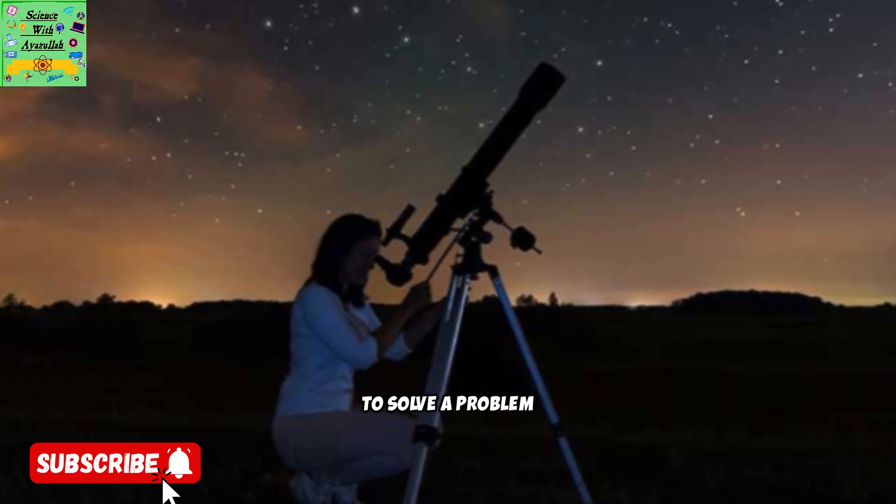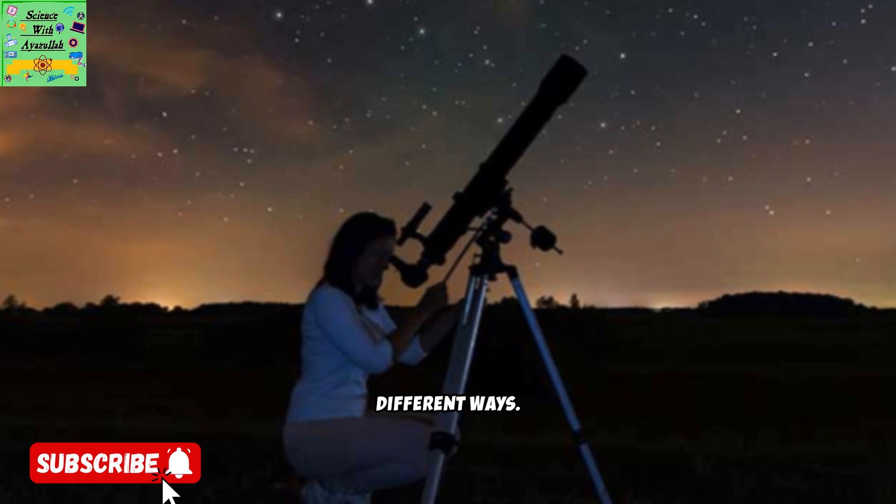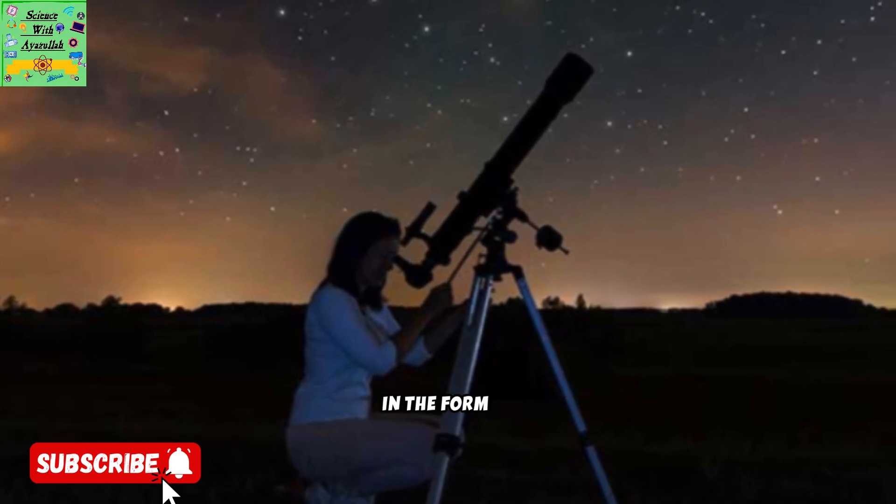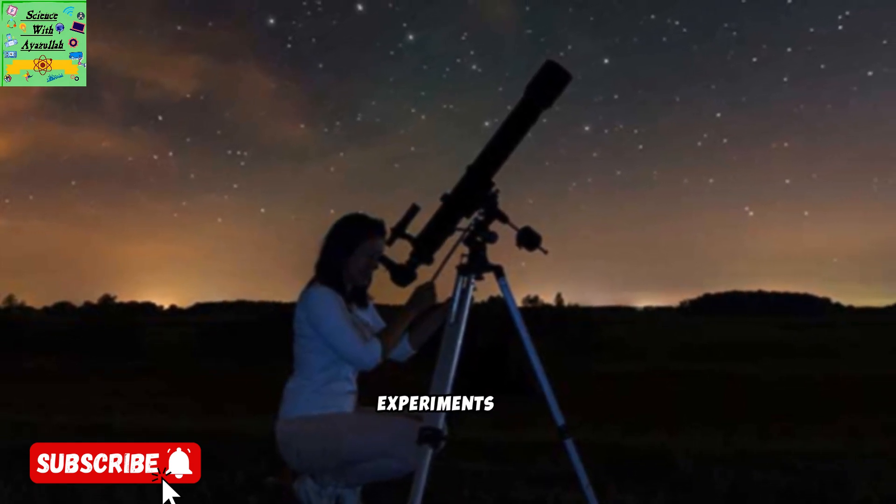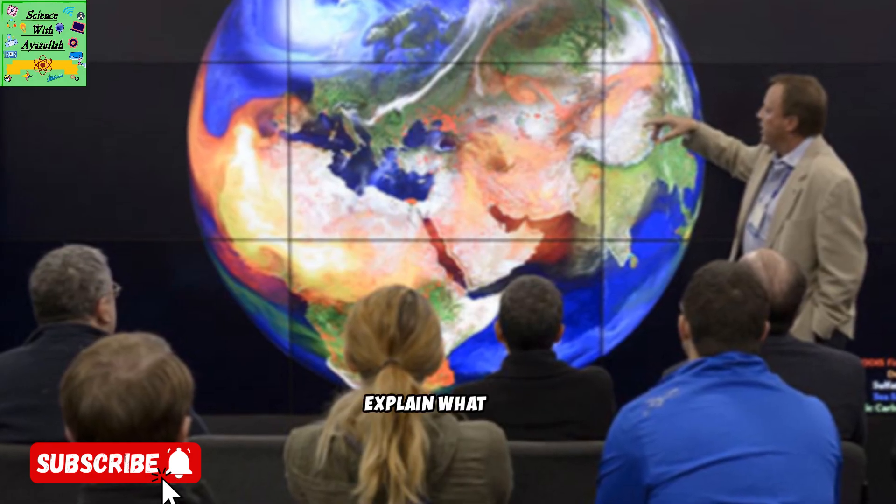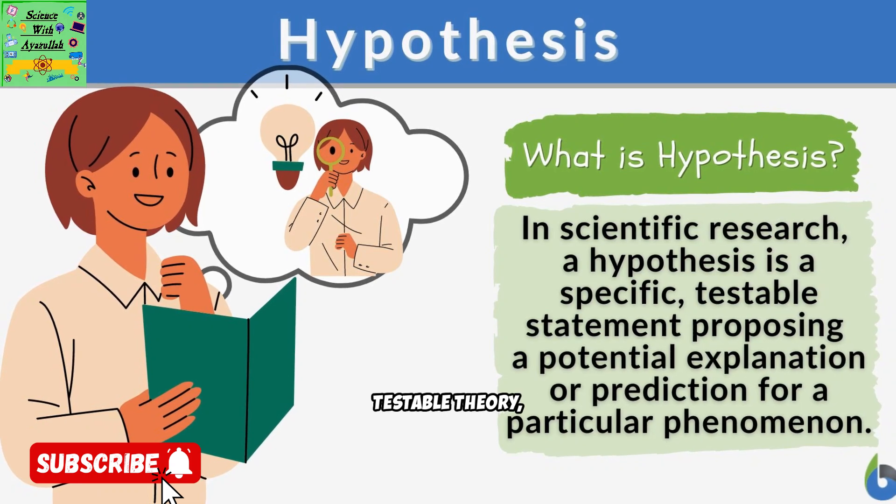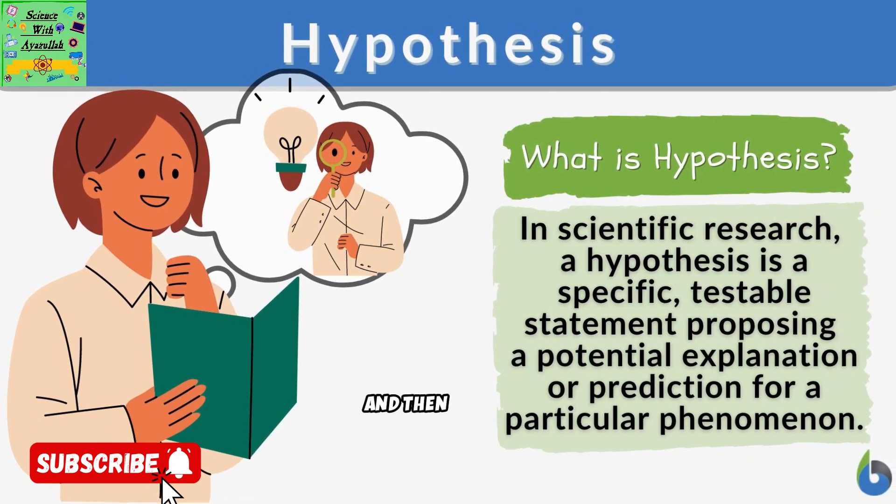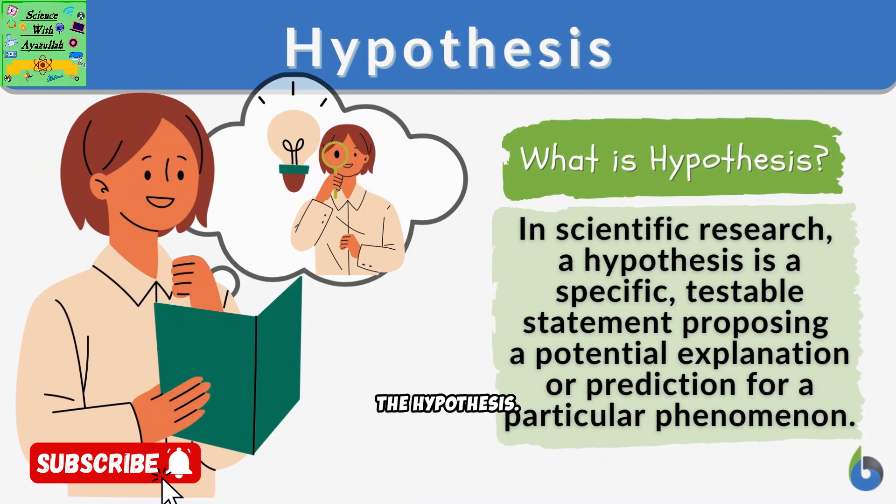Scientists can try to solve a problem like this in two different ways. They can look for evidence in the form of facts from observations or experiments to support their theory, and then try to explain what they have found. They can think of a testable theory, called a hypothesis, and then look for evidence to support the hypothesis.